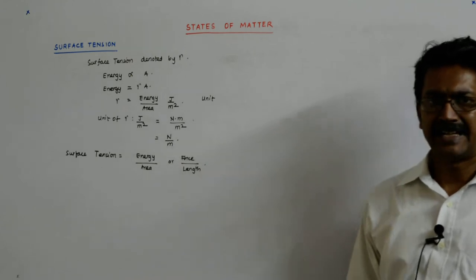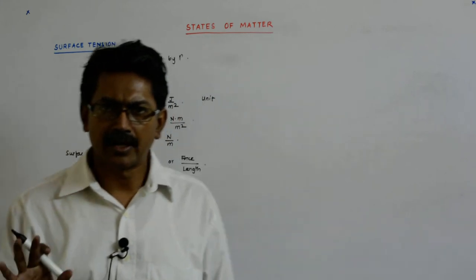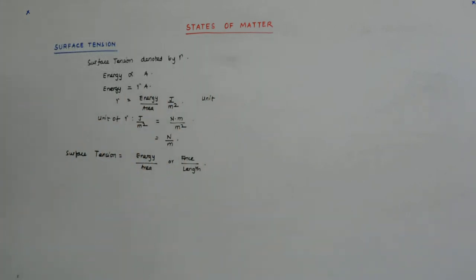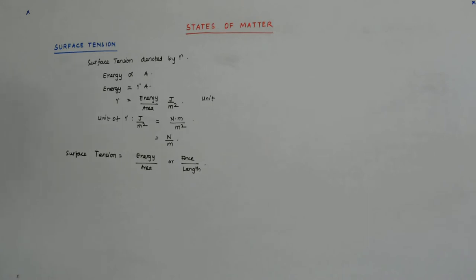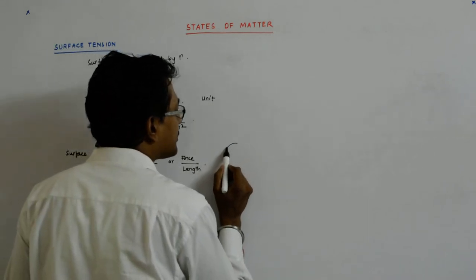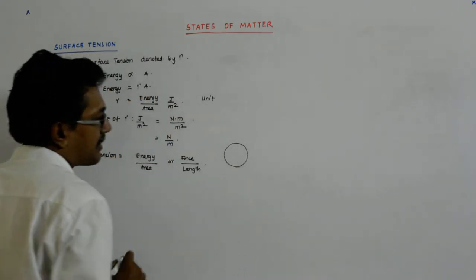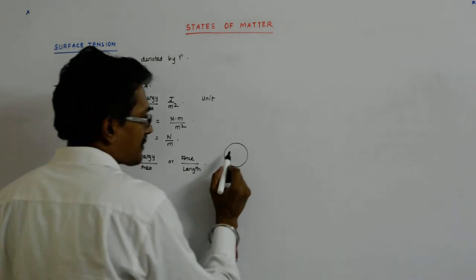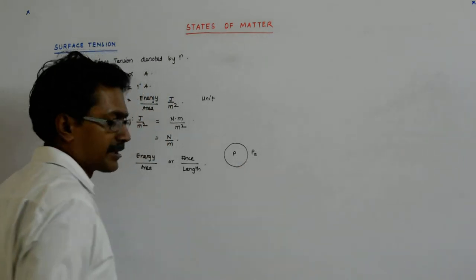Both expressions — energy per unit area and force per unit length — have their own usage and are used at different places. We'll see that later. Now surface tension has certain interesting connotations. One of them is that the pressure inside a bubble is greater than the atmospheric pressure.